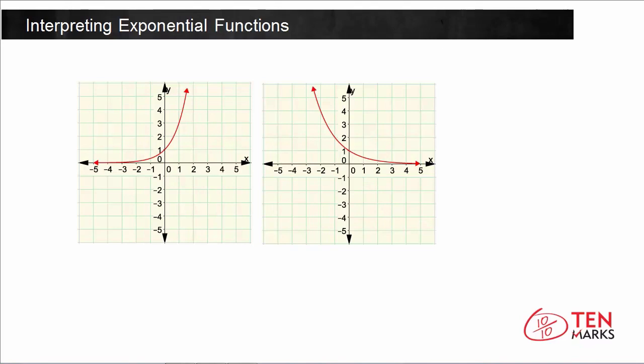Now, the general form for an exponential function is f of x equals a times b to the power of x. This is the general form. It can also be represented as f of x equals b to the x if a equals 1.